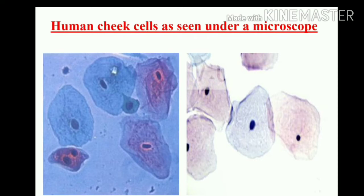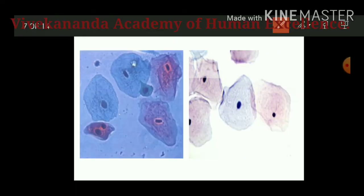You may notice several cells in the scraped material. You are able to identify the cell membrane, cytoplasm, and the nucleus. A cell wall is absent in animal cells. This outermost covering is the cell membrane. Cell wall is actually absent in animal cells.